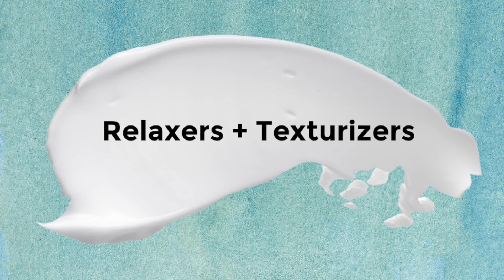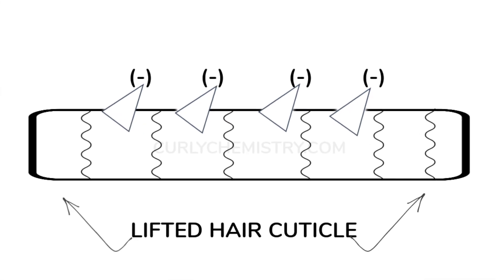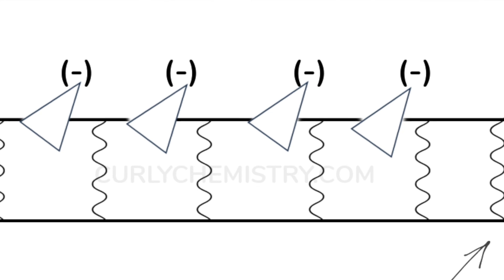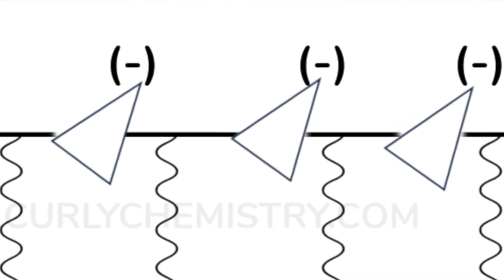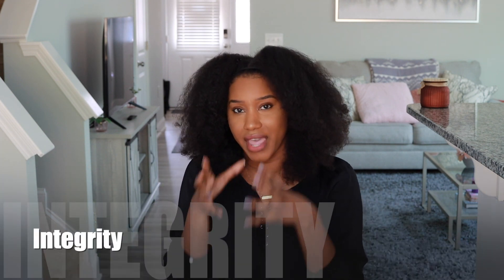Number two is going to be ingredients found in relaxers: sodium hydroxide, potassium hydroxide. As you may know, relaxers have a very high pH — that is what makes relaxers do what they do. They lift the cuticle because of that high pH. High pHs tend to lift the cuticle, and once they go inside the cuticle, they're breaking the disulfide bonds, which is changing the hair texture. And once you break the disulfide bonds within the hair, that compromises the protein, the strength, the integrity of the hair.